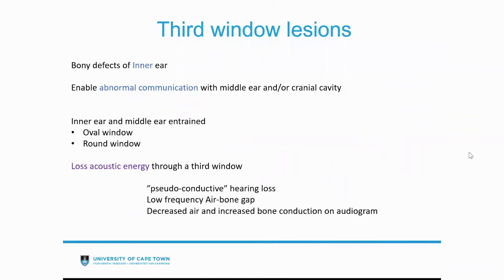So what are third window lesions? They are, in essence, bony defects of the inner ear. They enable abnormal communication with the middle ear and the cranial cavity. Usually your inner ear and middle ear are connected via your oval window and round window. But when you have a third window — this bony defect — you have quite a lot of loss of acoustic energy through that window, creating a pseudo-conductive hearing loss. Characteristically, in the low frequencies, you get this air-bone gap with decreased air conduction but increased bone conduction on your audiogram.